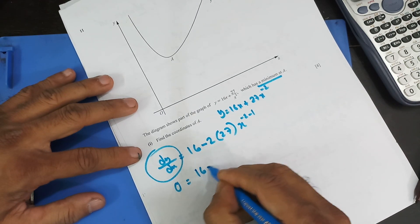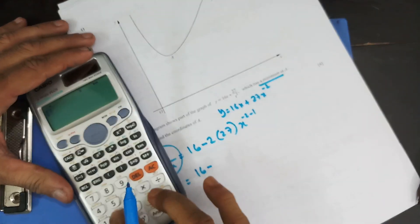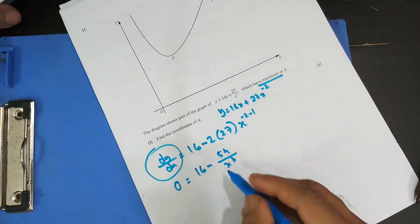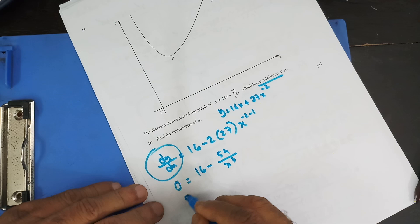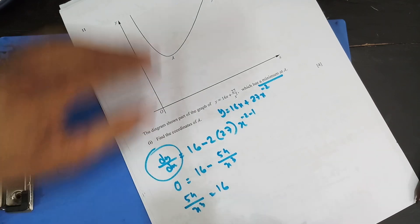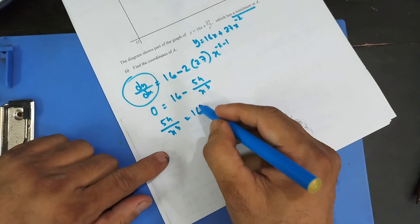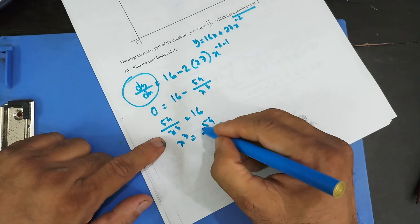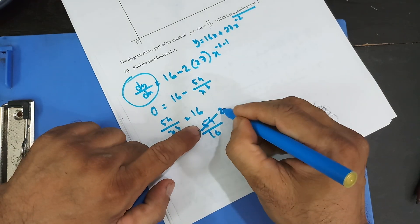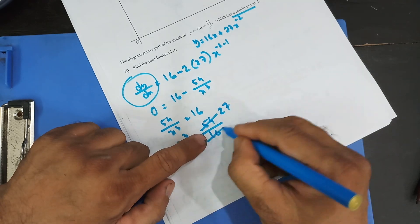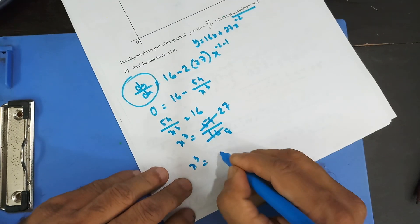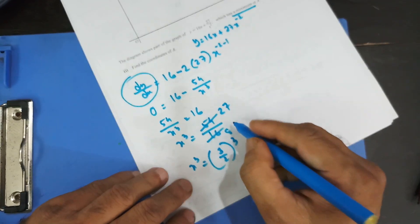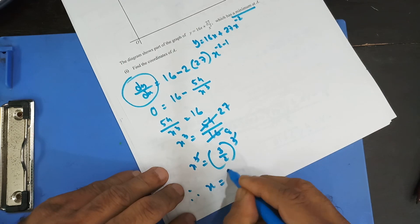So 16 minus 54x to the power minus 3 equals 0. Bringing 54 over x cubed to this side: 54 over x cubed equals 16, so x cubed equals 54 divided by 16. Cross out by 2, giving 27 over 8, which can be written as (3/2) cubed. Since 3 cubed is 27 and 2 cubed is 8, therefore x equals 3 over 2.